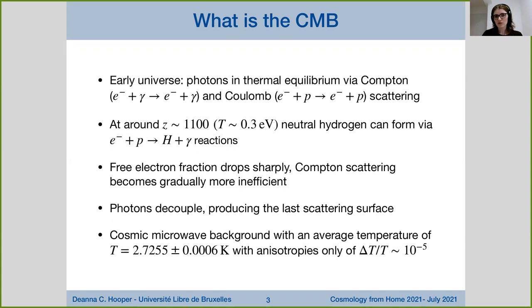Due to redshifting, these photons are now in the microwave range of the electromagnetic spectrum and have an average temperature of 2.73 Kelvin, with anisotropies only at the level of 10 to the minus 5. The CMB is considered a cornerstone of modern cosmology — it was one of the main predictions of the hot big bang cosmology and cemented the big bang model as our main paradigm to understand the universe. The CMB anisotropies provide a remarkable amount of information about many different early universe probes.